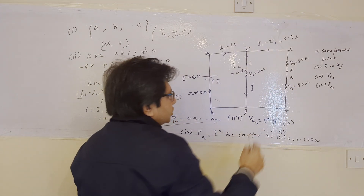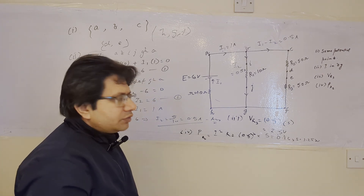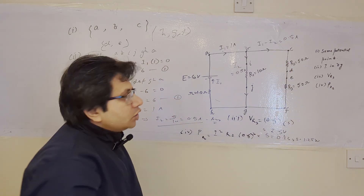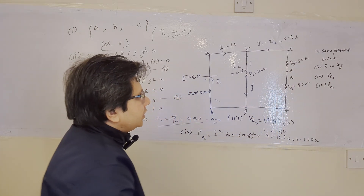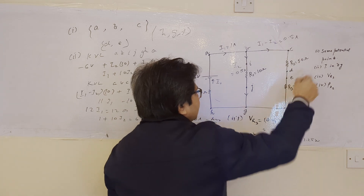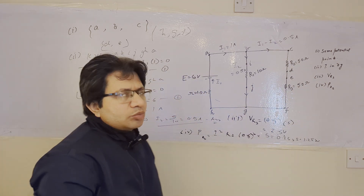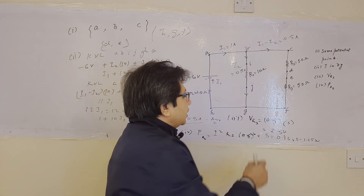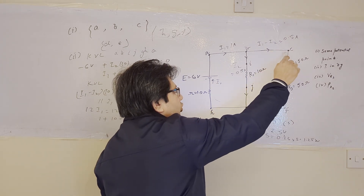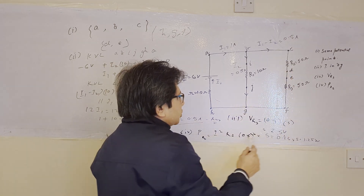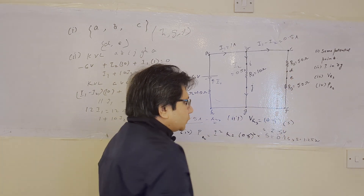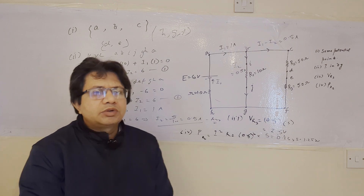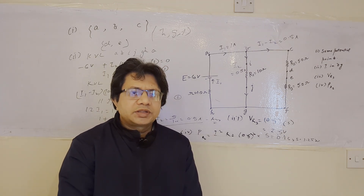Third part में voltage drop across R3 पूछा गया था। Ohm's law apply करें: V = IR = 0.5 × 5 = 2.5 volts। Last में R2 में power dissipated बतानी है। Power के formulas P = VI, I²R, या V²/R। यहाँ I²R use करें: 0.5² × 5 = 0.25 × 5 = 1.25 watts। So this is the complete solution of this particular problem. Hope you understand the solution as well as the explanation. Thank you.